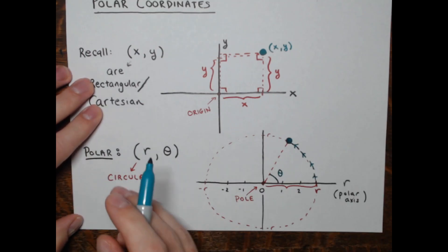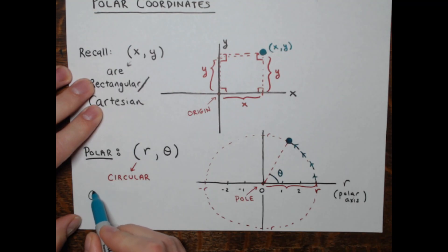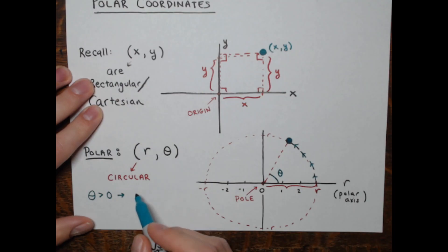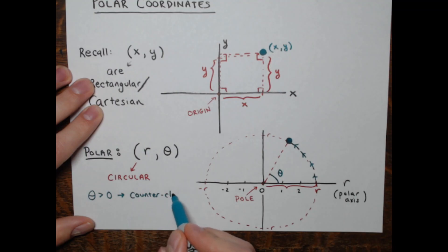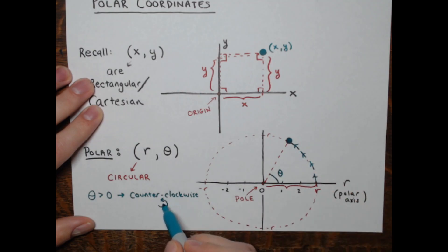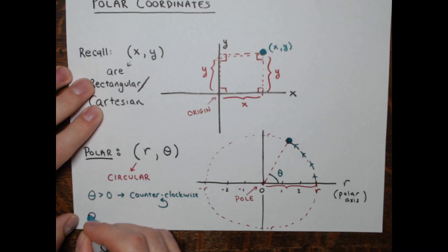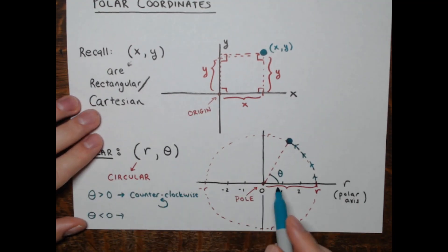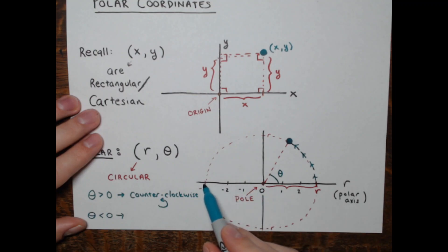To refresh your memory from trig: if theta is positive, that means you're traveling counterclockwise. If theta is a negative number, negative angles are measured clockwise. So if theta is negative, you go to whatever value of r and then go clockwise.